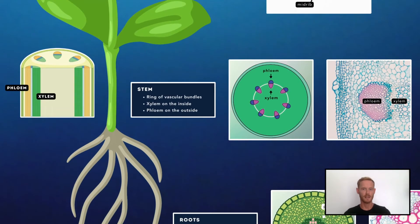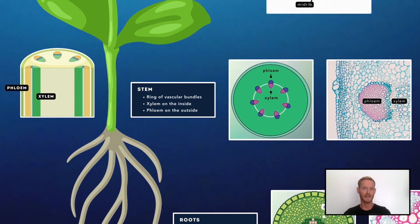In the stem, several vascular bundles form a ring-like structure. The space between the bundles and the epidermis is called the cortex, and the central tissue of the stem is called pith. The phloem is always located on the outside of the bundles, and the xylem on the inside.